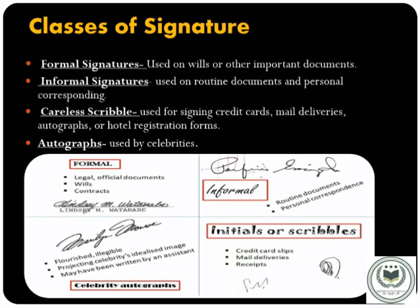Next are the classes of signature. Signatures are classified into four classes. First, formal signature, which is basically used on bills and other official documents. Second, informal signature, used in routine documents and personal correspondence. Third, careless scribble, typically seen on credit cards, mail deliveries, autographs, or hotel registration forms. Fourth, autographs, which are usually used by celebrities.